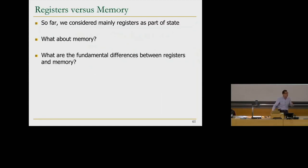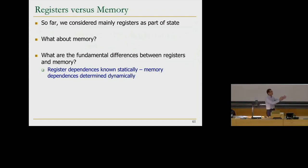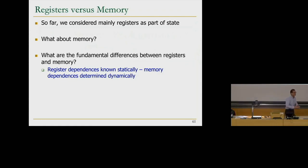There are multiple fundamental differences between memory and registers. The first one causes a lot of complexity in the design. Register dependencies are known statically — you look at an instruction, it sources register 3, you know the sources and the destination. You can do renaming easily because you know everything at the front end after you decode the instruction. But with memory, you need to execute the instruction a little bit to get the address. You don't know the memory address at the beginning of the pipeline in the decode stage, and this is the cause of all of the headaches.